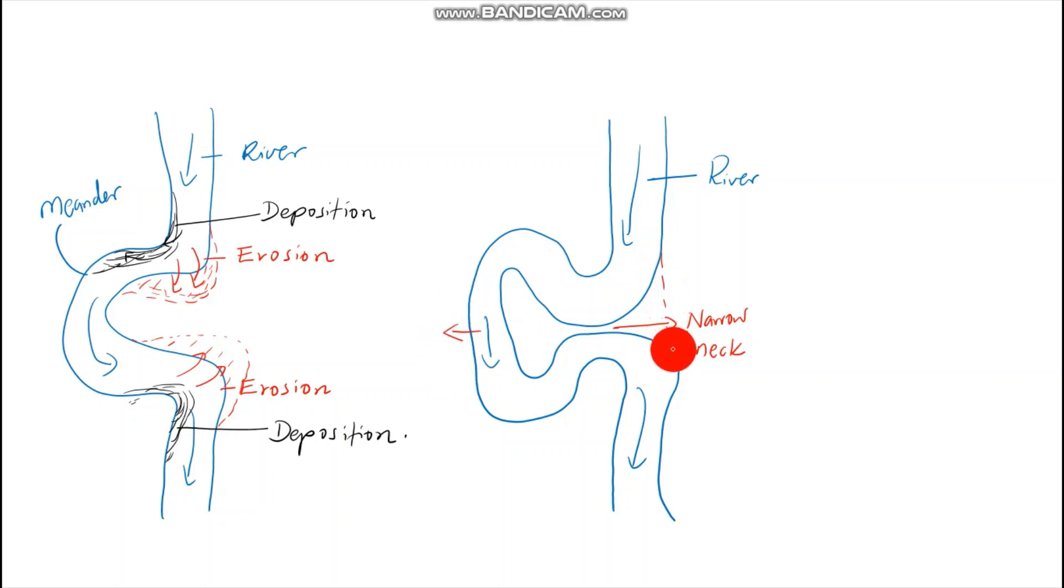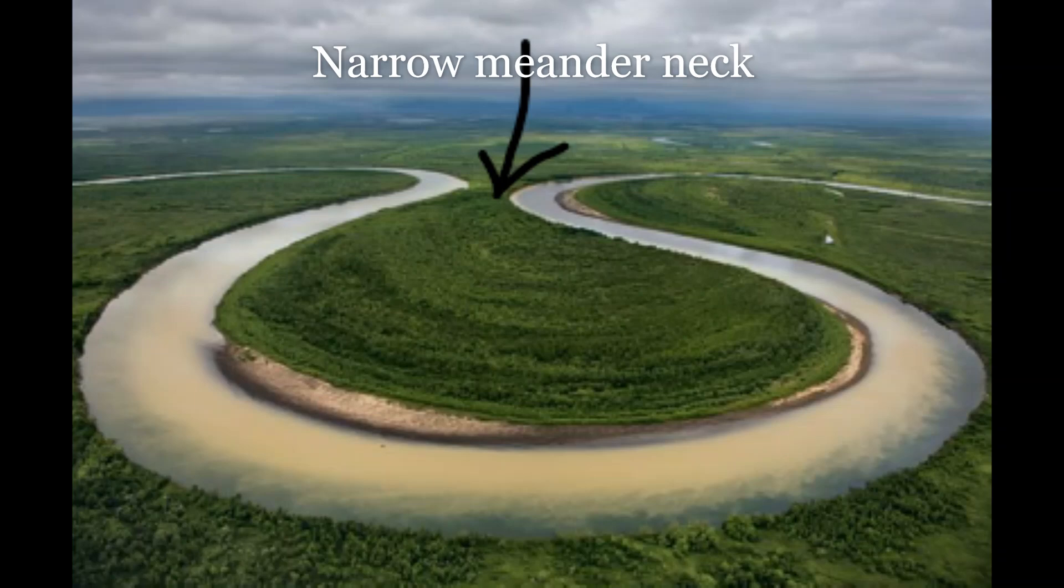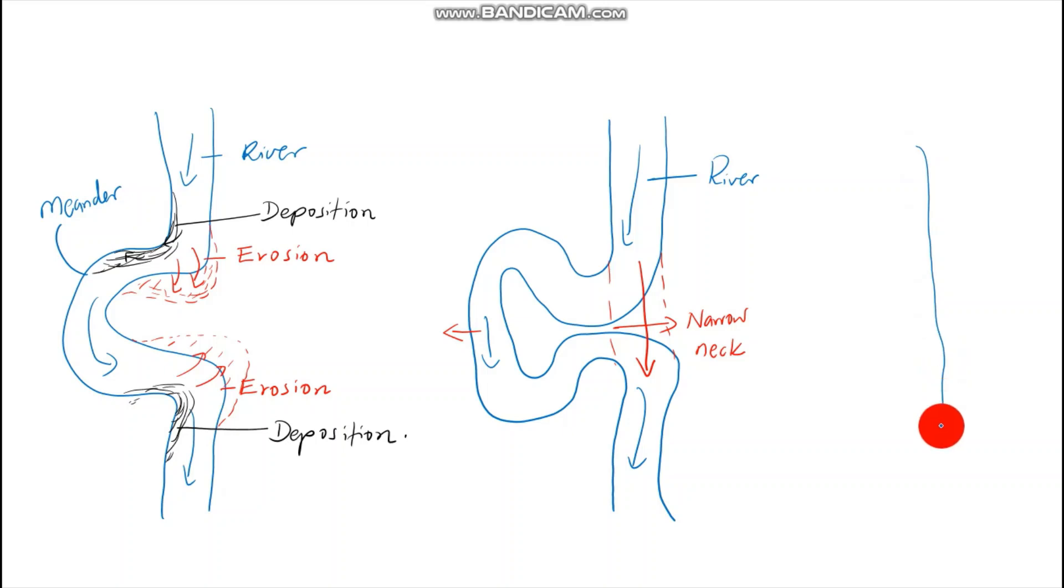Eventually what happens is that the river is likely to take a shortcut through that narrow neck and break it off. The neck is so narrow such that the current of the outer bank is likely to break it and the river will flow in a straight line.